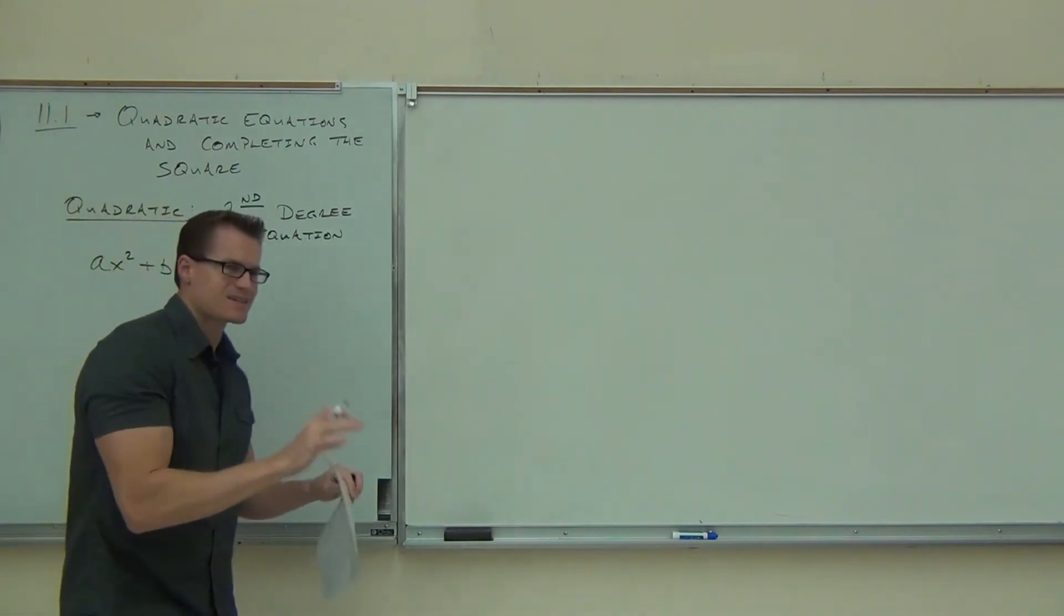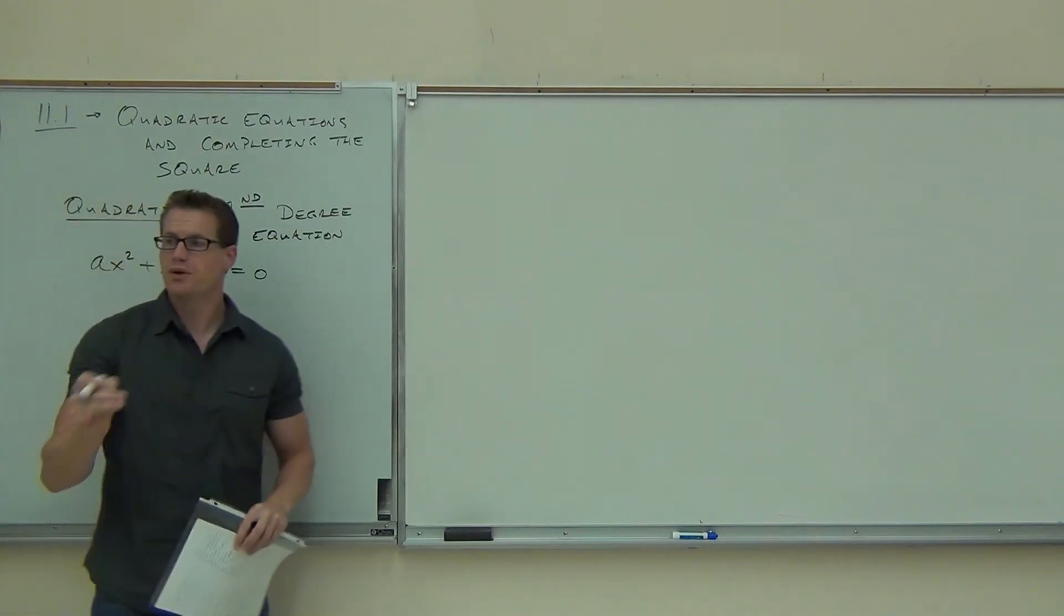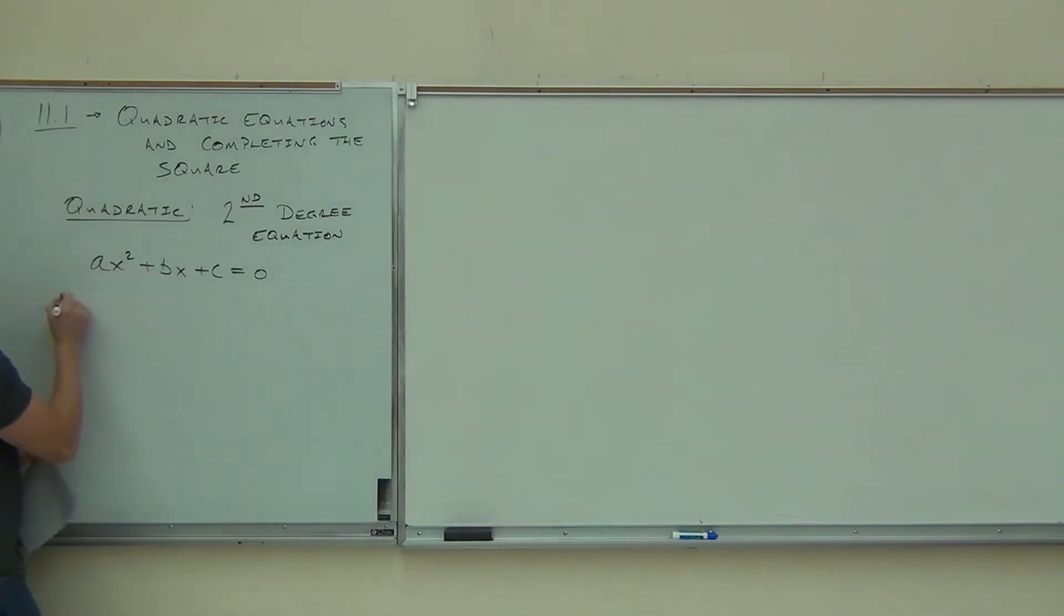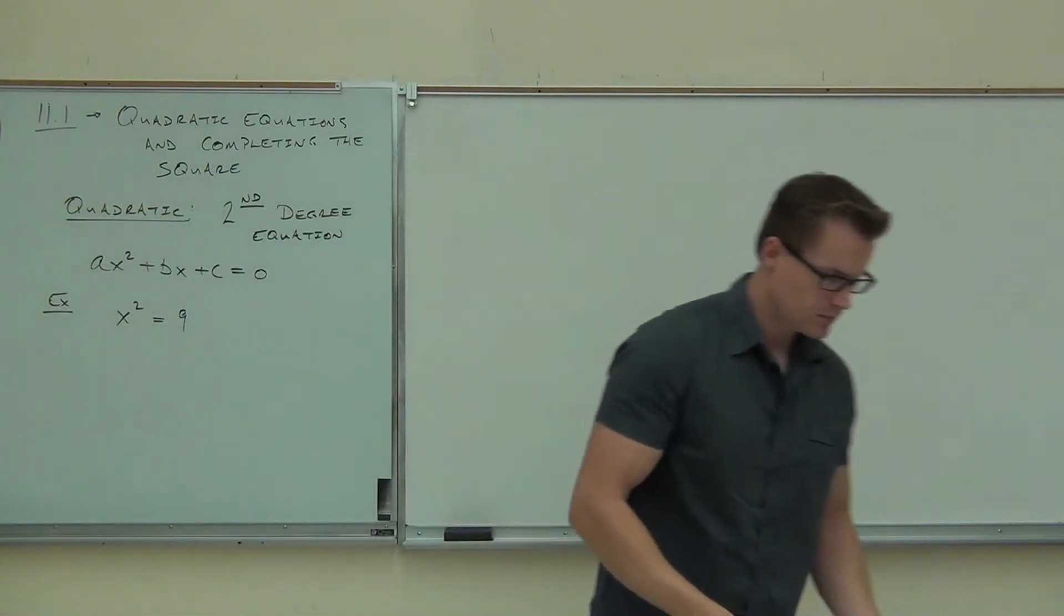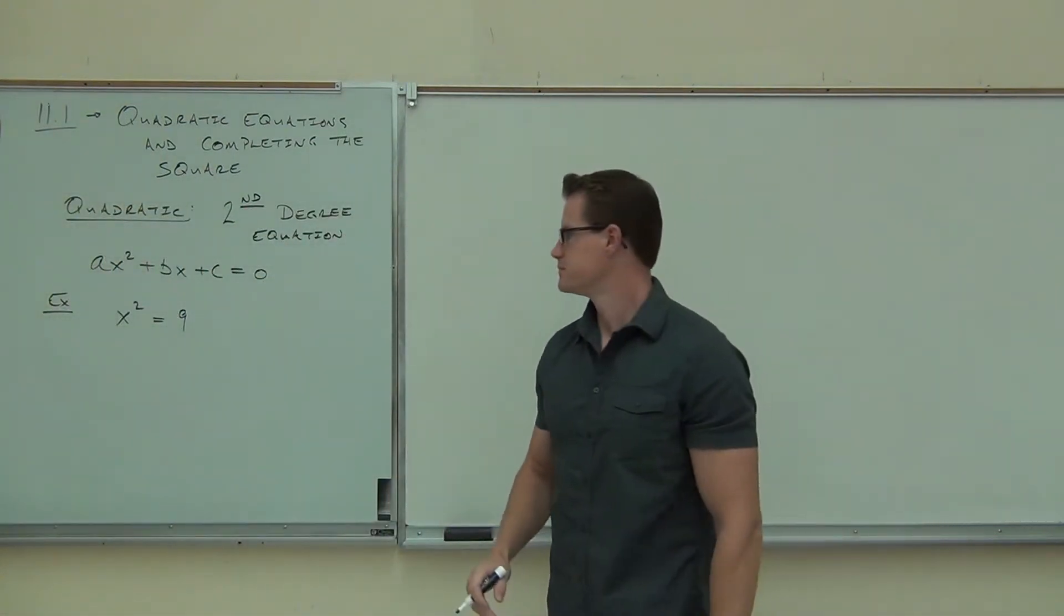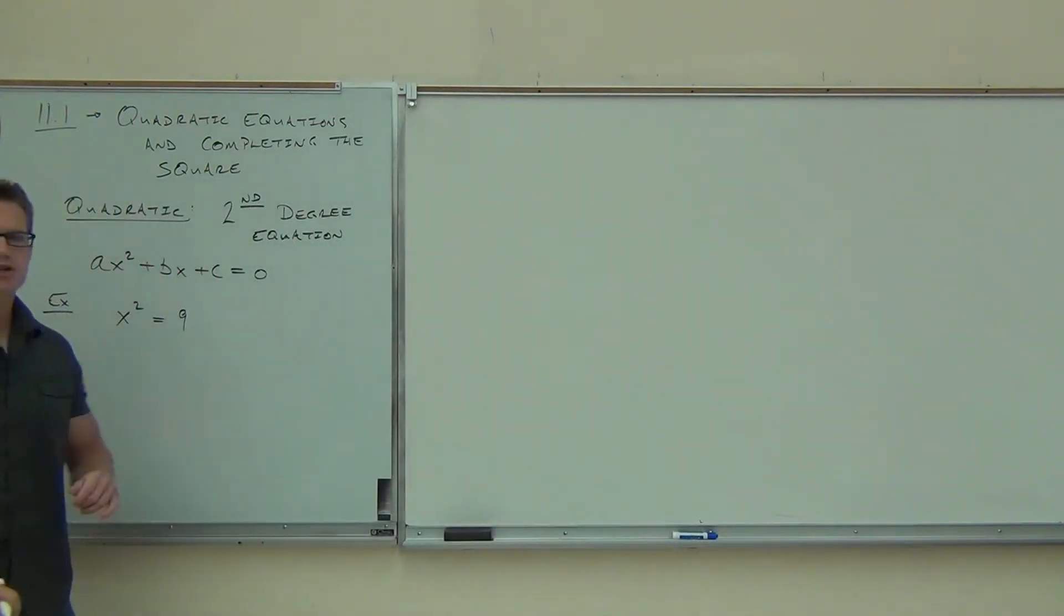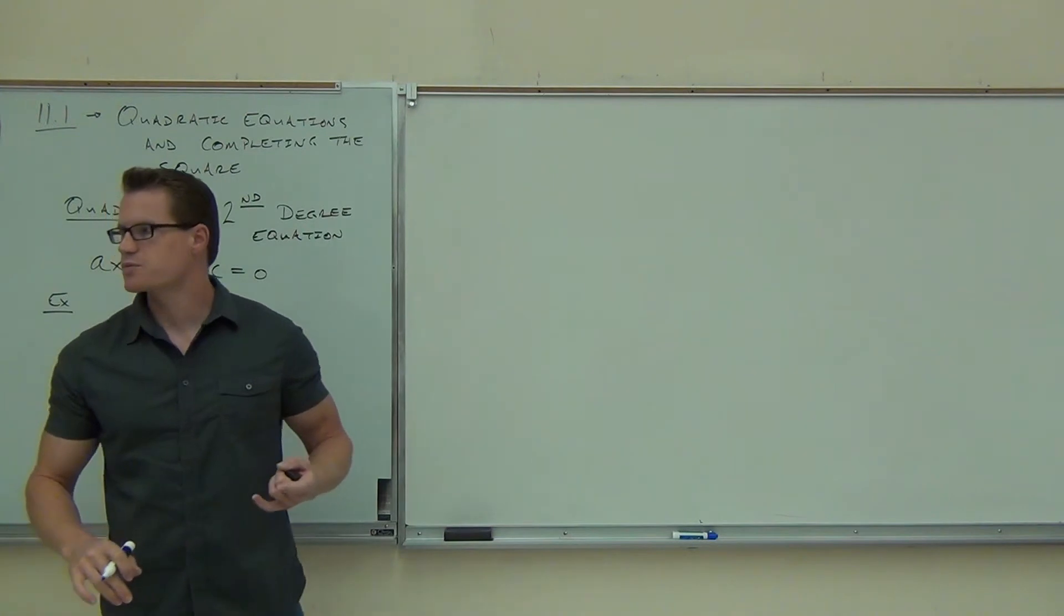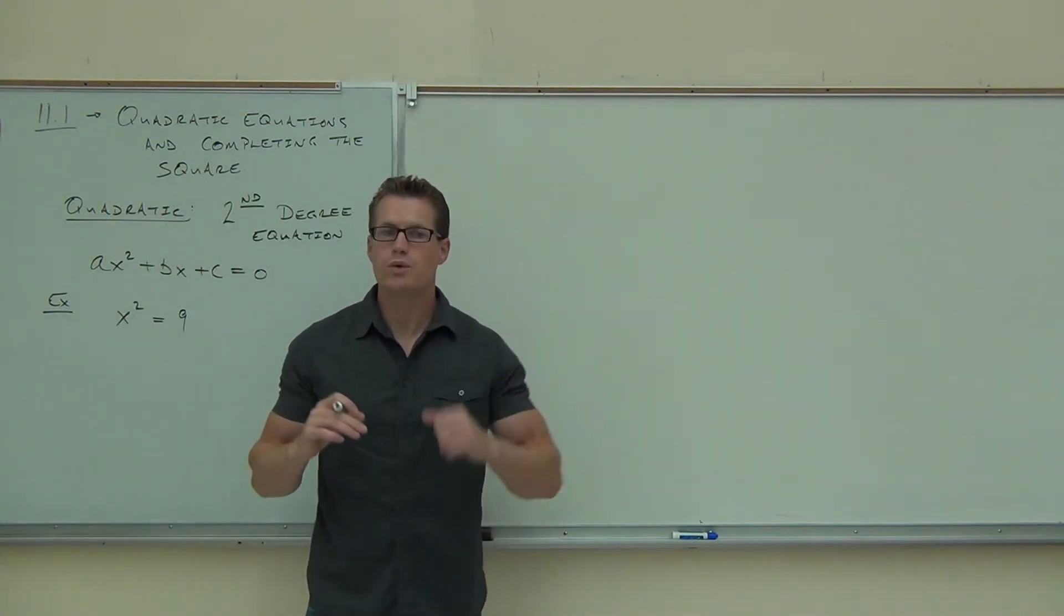Well, we're going to start kind of down here. We're not going to worry about equations with this term right now. We're going to build up to that. First, I want to look at what happens when I take a simple example. Let's do x squared equals 9. Now, I'm going to show you two ways that we can solve this problem. One is the old way. One is going to be a new way. Are you with me? So, old way.